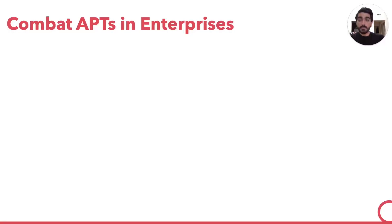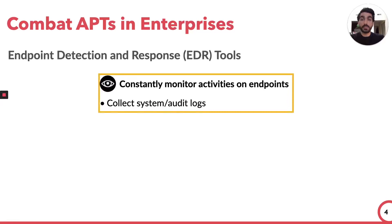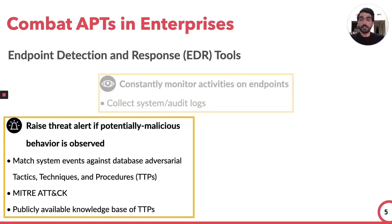One of the most widely used commercial security solutions for combating such APT attacks is known as Endpoint Detection and Response, or EDR. These EDR tools consist of three main features. First, they constantly monitor enterprise-wide activities by collecting system logs or audit logs on the end-hosts. Second, these EDR tools generate threat alerts if some potentially malicious behavior is observed. These threat alerts are raised by matching end-host system events against knowledge bases of adversarial tactics, techniques, and procedures, also known as TTPs, where tactics describe why an adversary performs an action while techniques describe how exactly they achieve it.